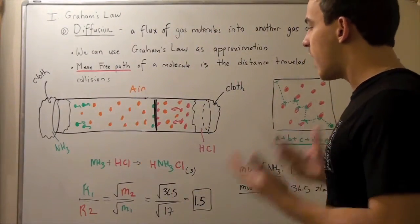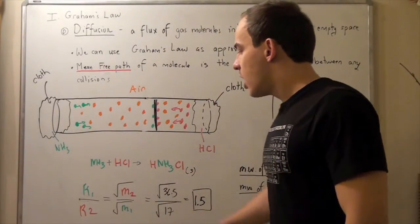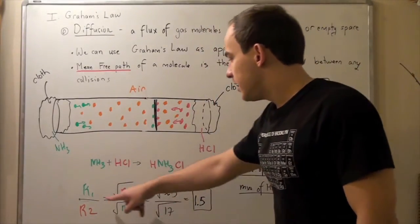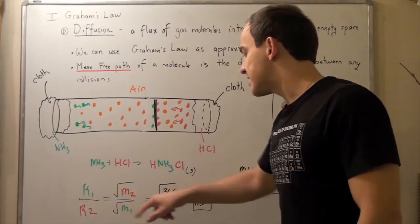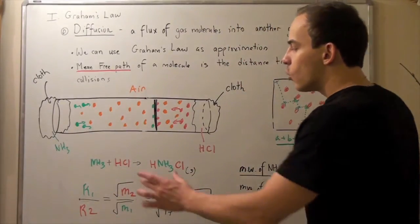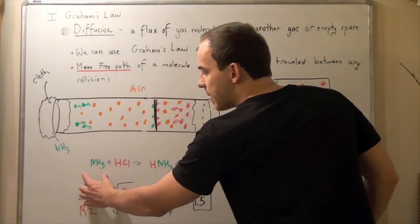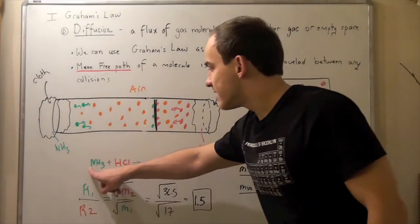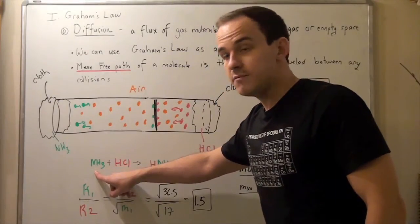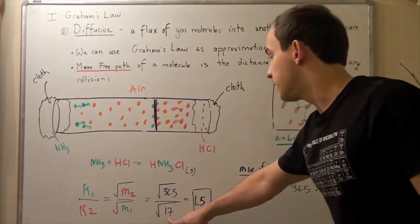And the way we do it is as follows. So rate 1 over rate 2 equals square root of mass of 2 divided by the square root of mass of 1. So what's the molecular weight or mass of my ammonia? Well, it's 14 plus 3 gives us 17 on the bottom.